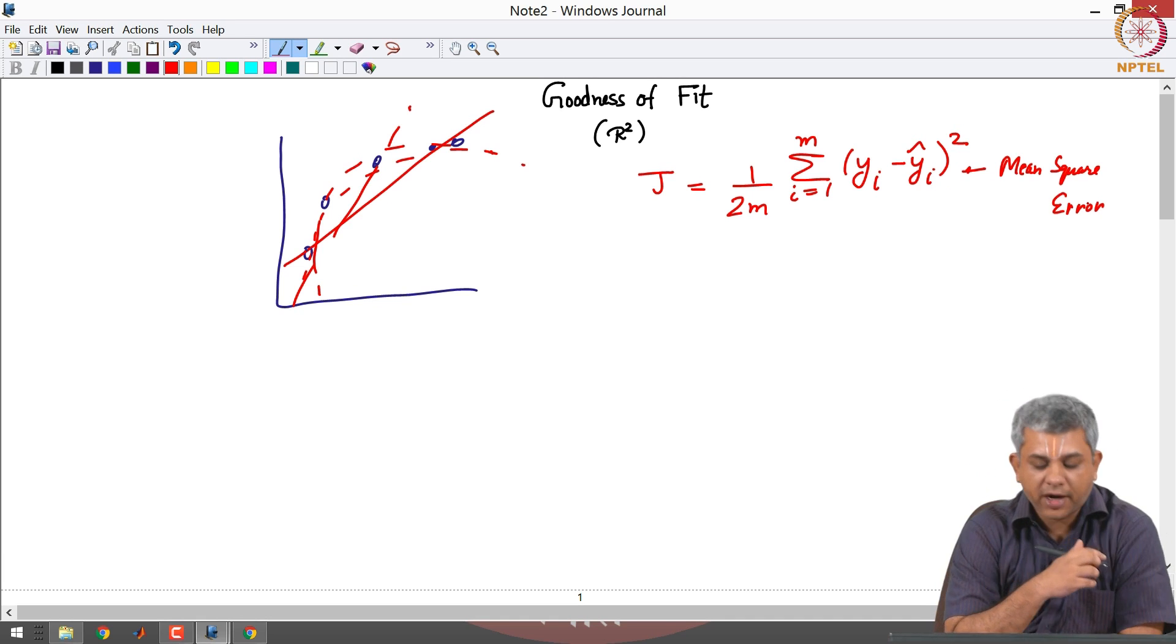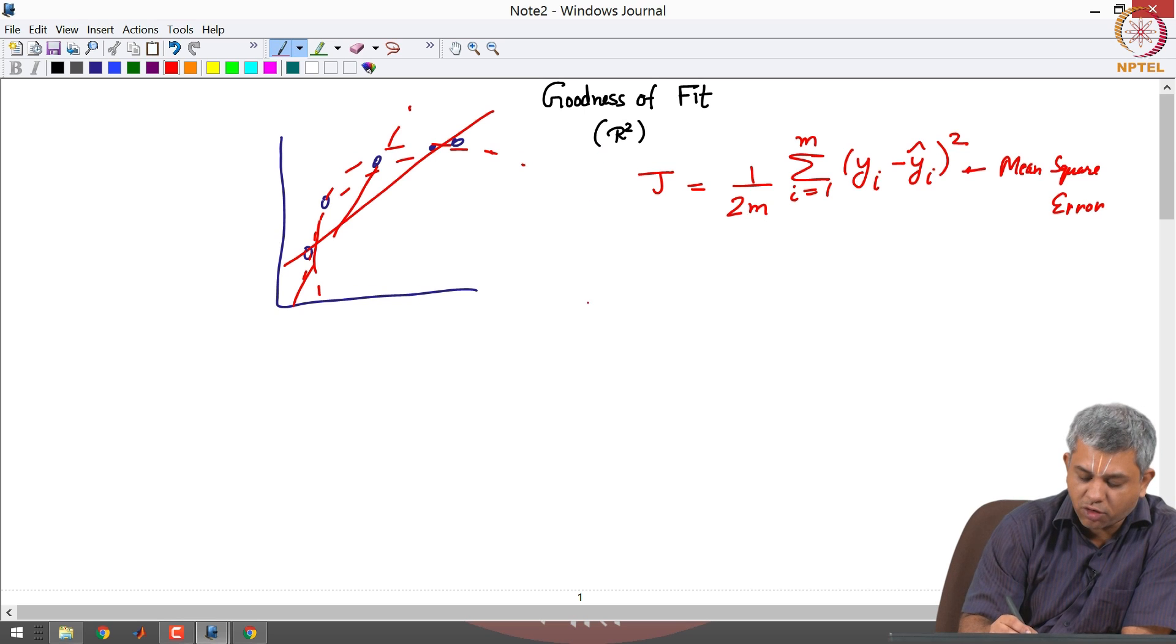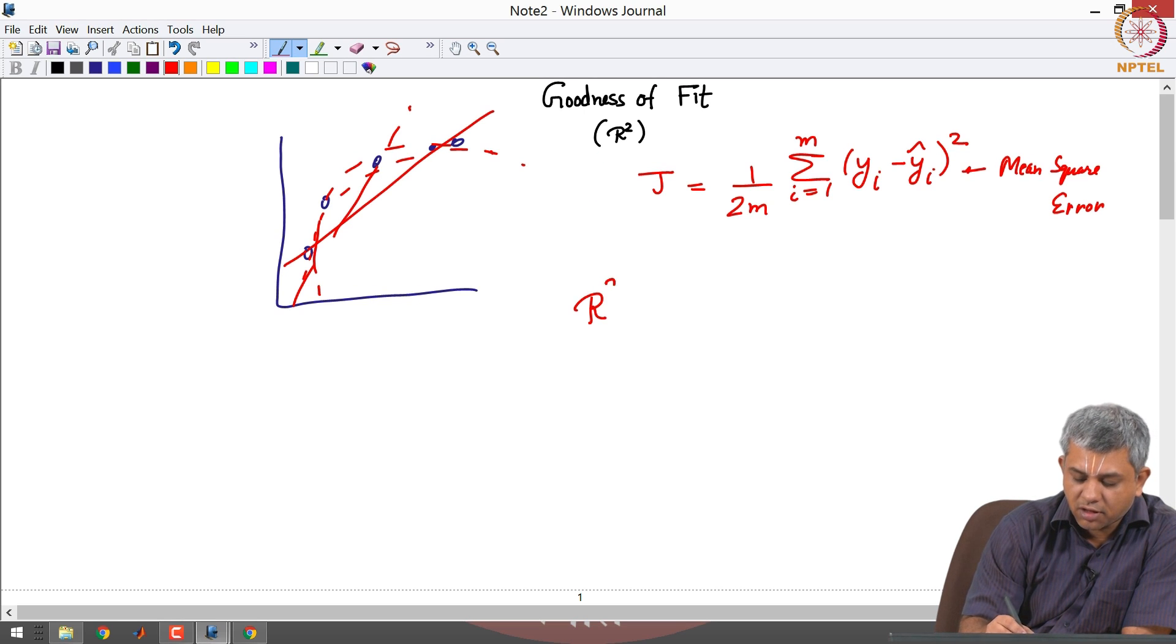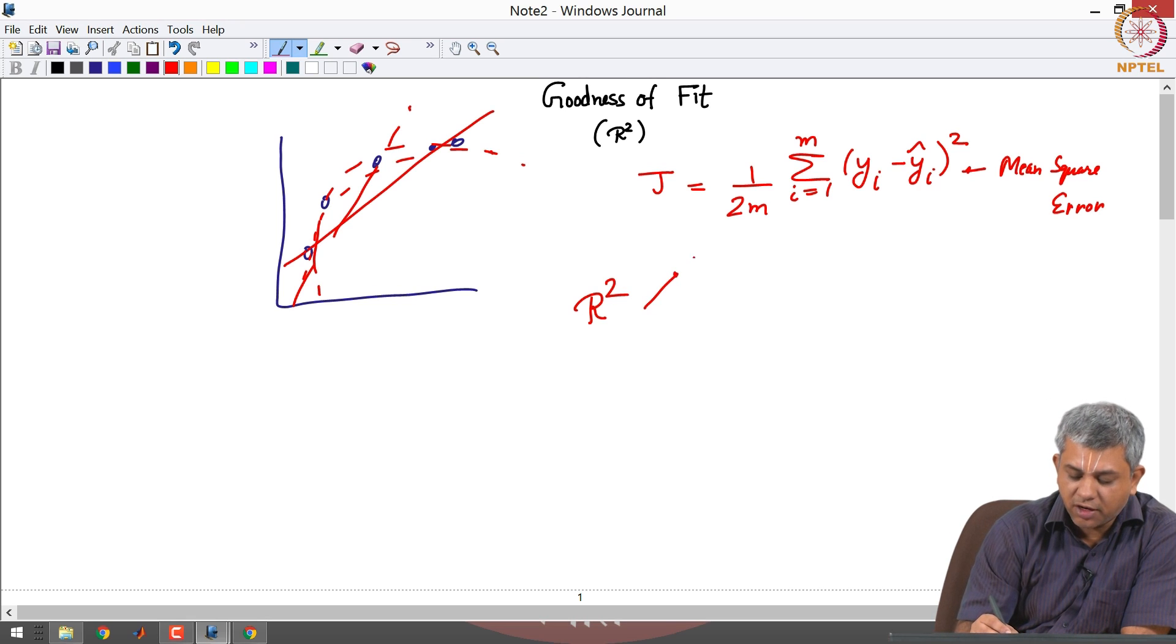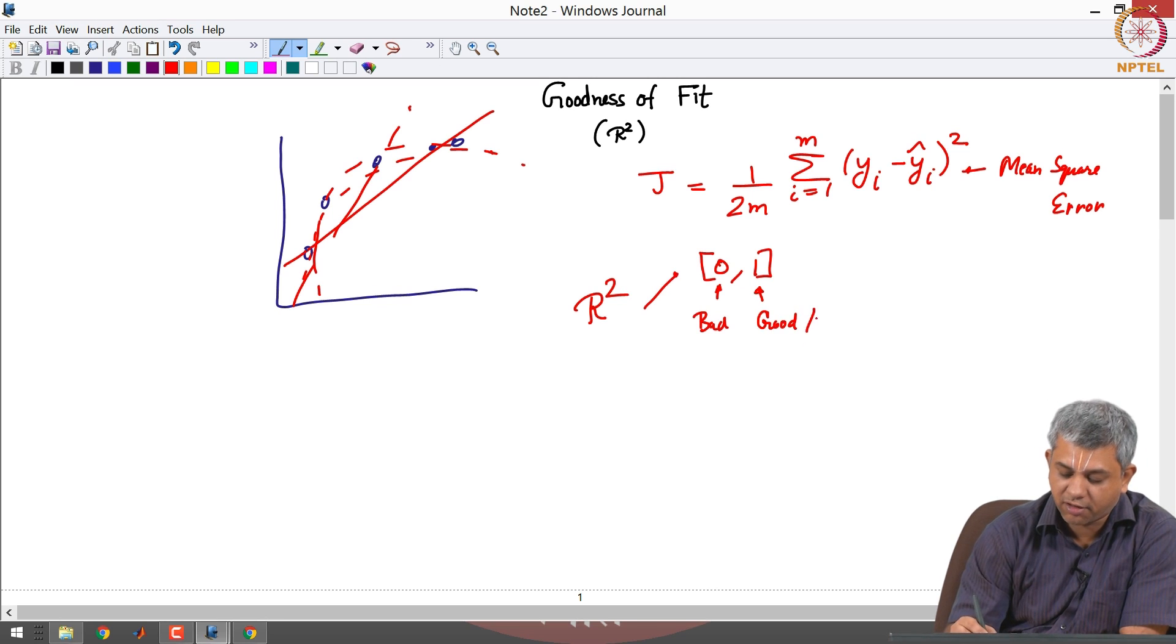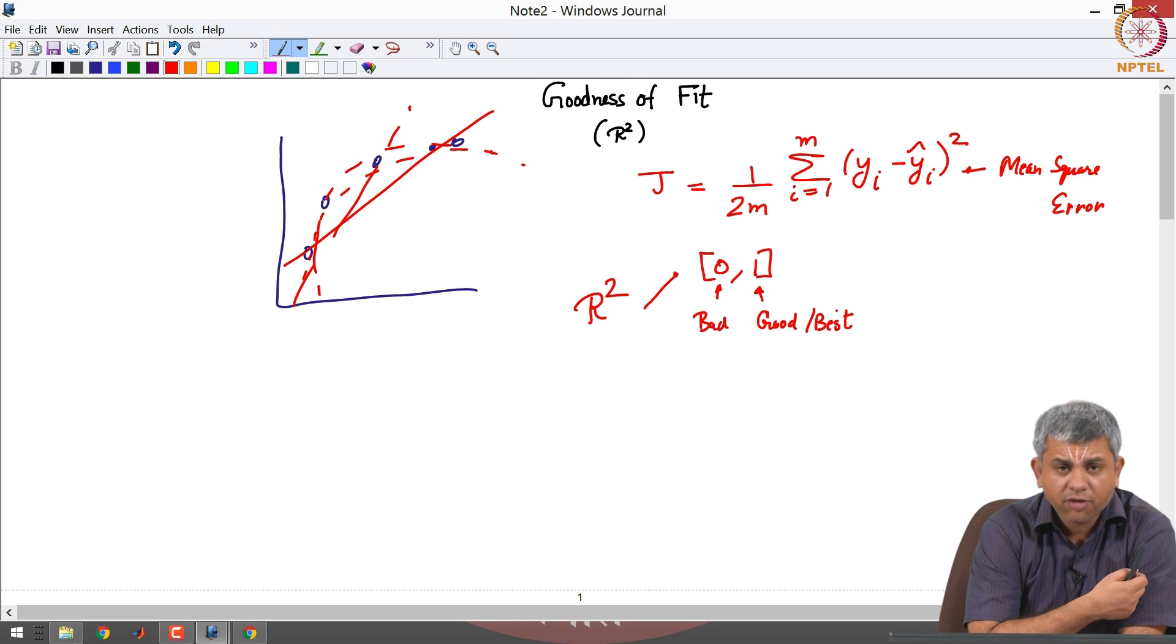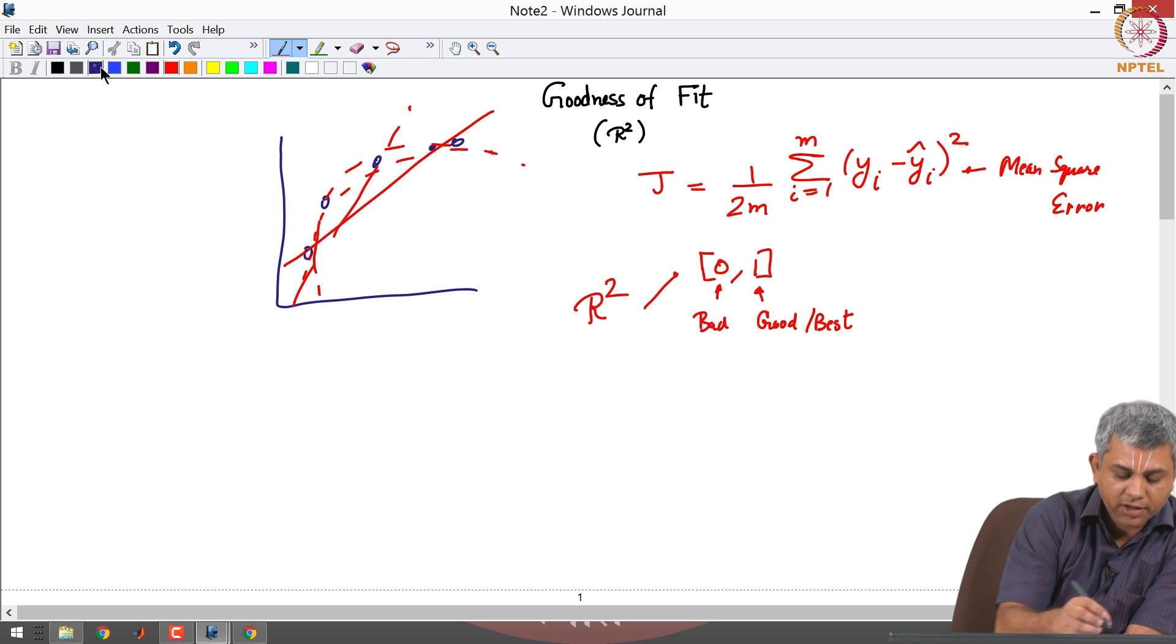A measure for that is something called R square, where R square will lie between 0 and 1, where basically 0 means really bad and 1 means great. This is probably the best fit that you can get. For this we need three different measures of variance in data.